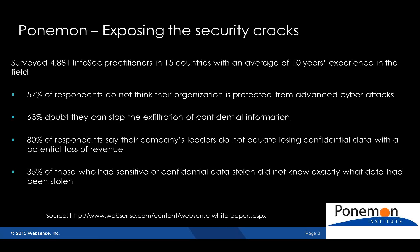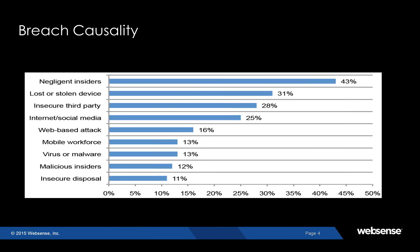Looking at breach causality — really looking at where breaches typically occur. We ran a survey looking at where most security professionals have concern around the source of these attacks. Number one, by a significant margin, was negligent insiders: employees working in organizations who already have access to data, in most cases leaking this data either intentionally, through misuse of technologies, or maliciously. We also had issues with lost or stolen devices, working with insecure third parties where data traverses networks, and even things like internet use and general social media.